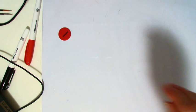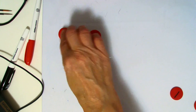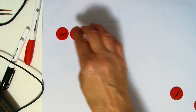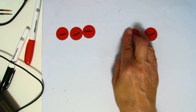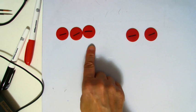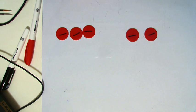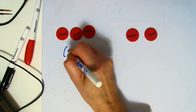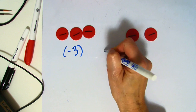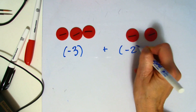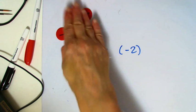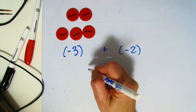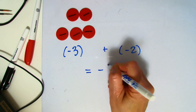The same is going to be true for working with negatives. So if I add a group of negatives with another group of negatives, I've got three negatives and two negatives. I would write that as negative three plus negative two. Because I'm adding, I'm combining those negatives together, which would give me a total of negative five.